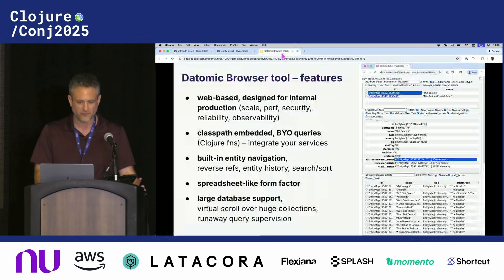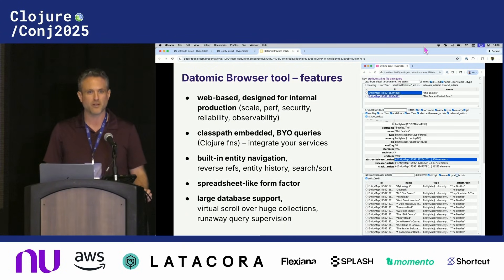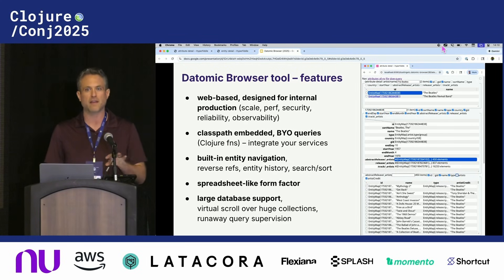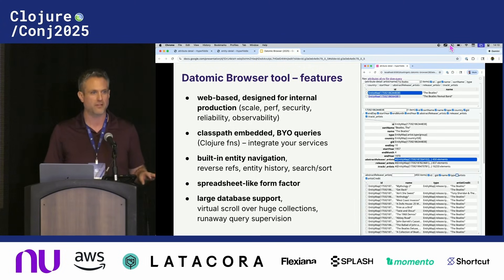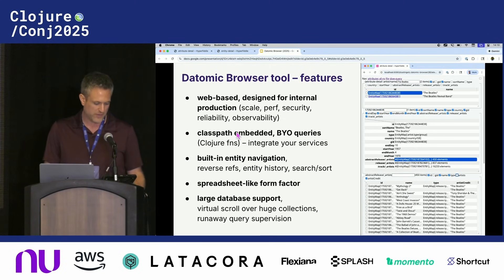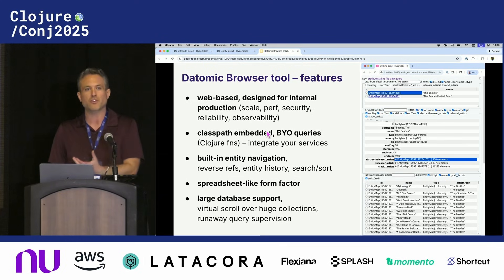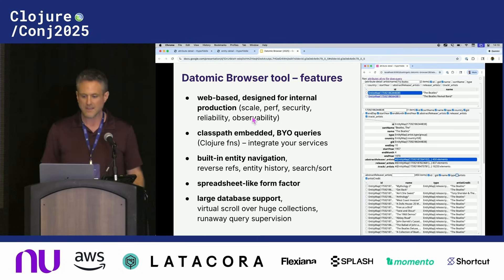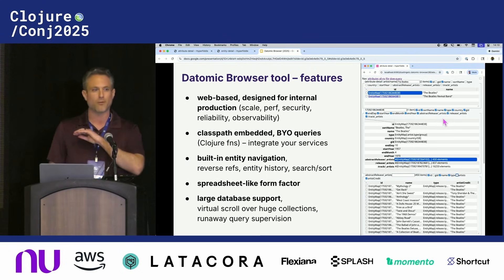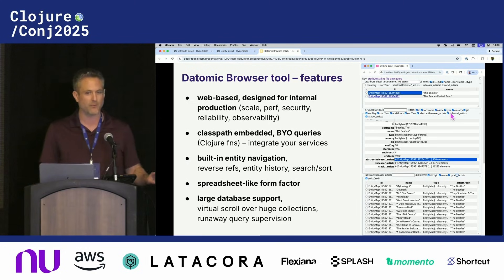Let's talk about operations. This is web-based, which means you can put it into production. Our hypothesis is that you will embed this in your production backend or microservice as a Ring middleware, and that means you get the standard HTTP middleware stack for security and dependency injection. The classpath embedding means you can bring your own custom queries, including security and access control. You can think of it more as a programmable hypermedia framework than an off-the-shelf tool. This demo was using Datomic on-prem, but since you bring your own queries it can support any database — XTDB, Datomic Cloud, SQL, whatever. If your company uses an ORM, that's no problem because you control the queries.